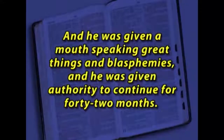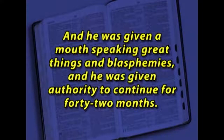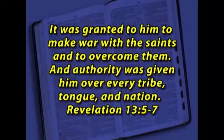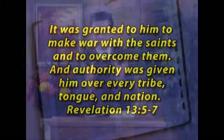Notice Revelation 13, verses 5 through 7, how this is all tied together. The Bible says: 'And he, this beast, was given a mouth speaking great things and blasphemies. He was given authority to continue for 42 months.' We've identified the sea beast as Rome and her rulers, and the time frame is 42 months. 'Then he opened his mouth and blasphemed against God, to blaspheme His name, His tabernacle, and those who dwell in heaven. And it was granted to him to make war with the saints, and to overcome them. And authority was given him over every tribe, tongue, and nation.'